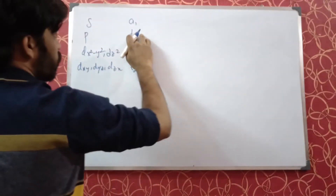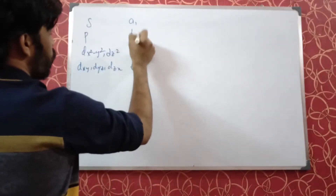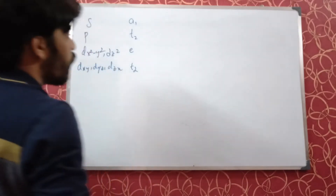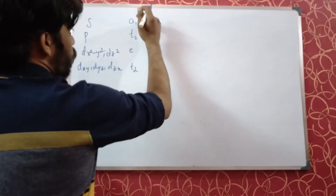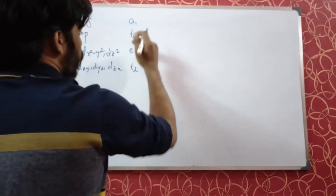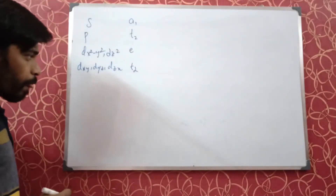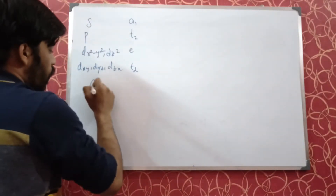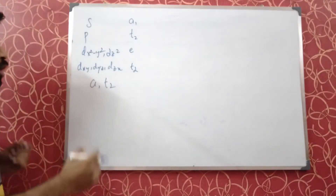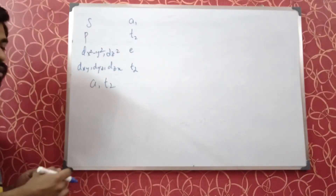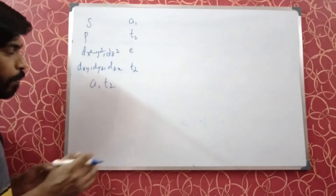Now this is not t1, it's t2. Which symmetry orbitals actually involve in tetrahedral bonding? The a1 and t2 symmetry orbitals can involve in tetrahedral sigma bonding in tetrahedral complexes.